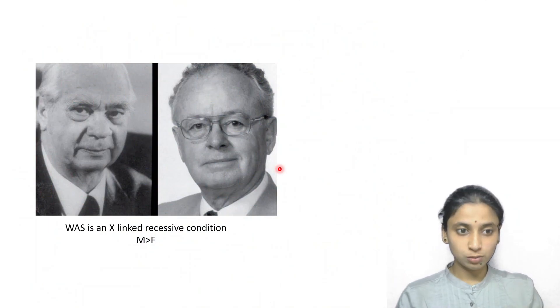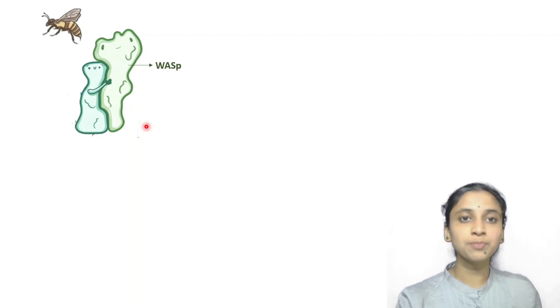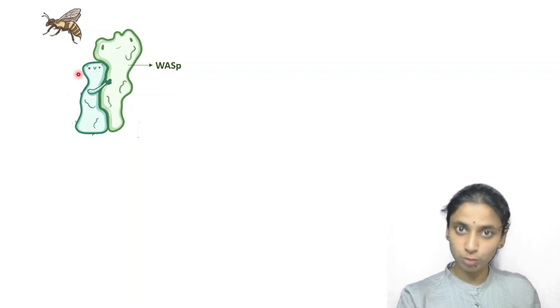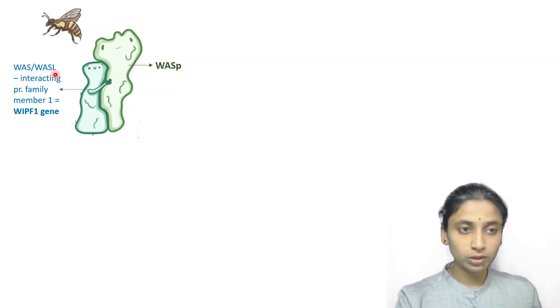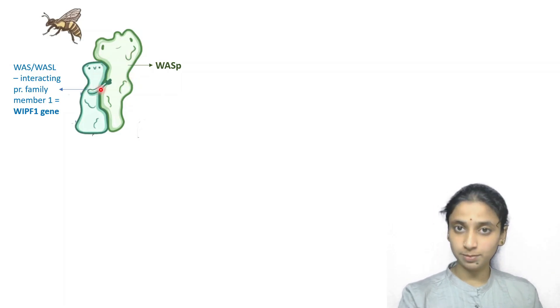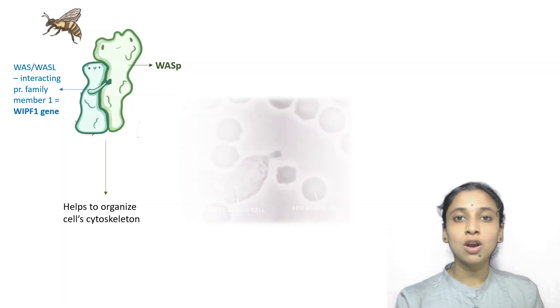Wiskott-Aldrich syndrome is an X-linked recessive condition, which implies males are affected more than females. Now let's understand the pathophysiology. What you are seeing here is the Wiskott-Aldrich syndrome protein, synthesized by hematopoietic stem cells or cells of the bone marrow. It can be shortly called WASP. What you are seeing here is the protein encoded by a gene called WIPF1, which encodes for the protein WAS/WASL-interacting protein family member 1. This protein helps in the stabilization of WASP.